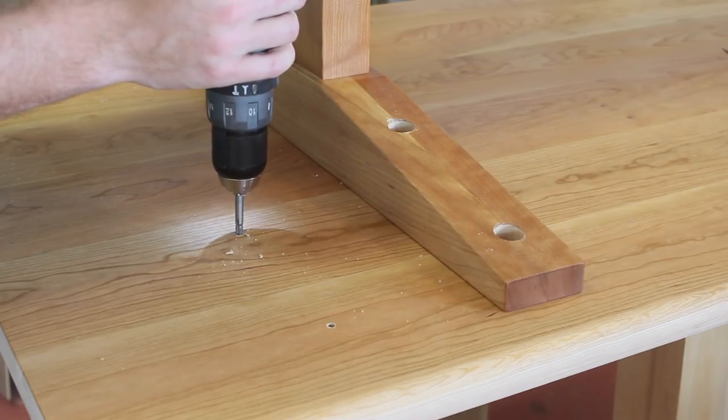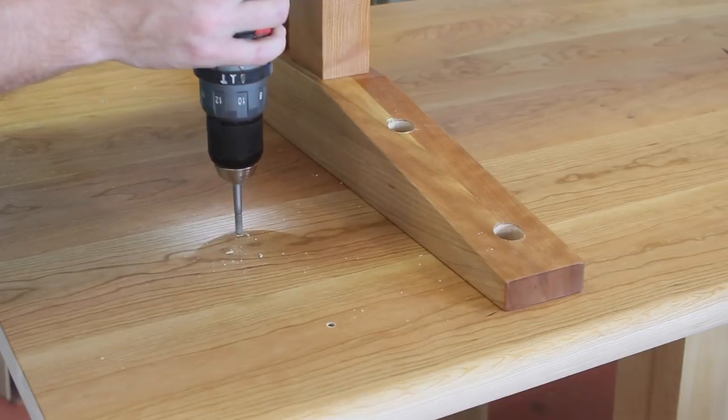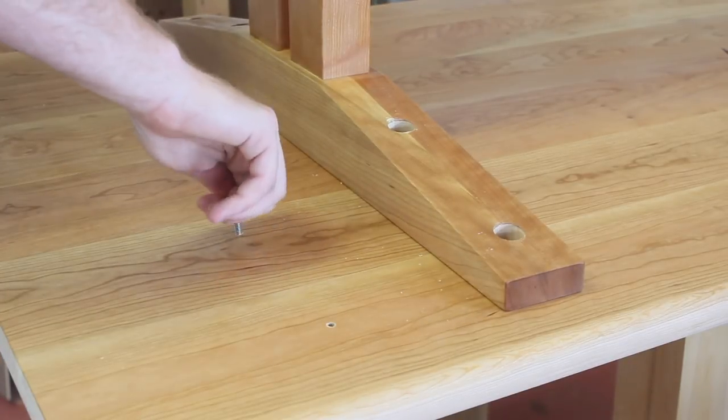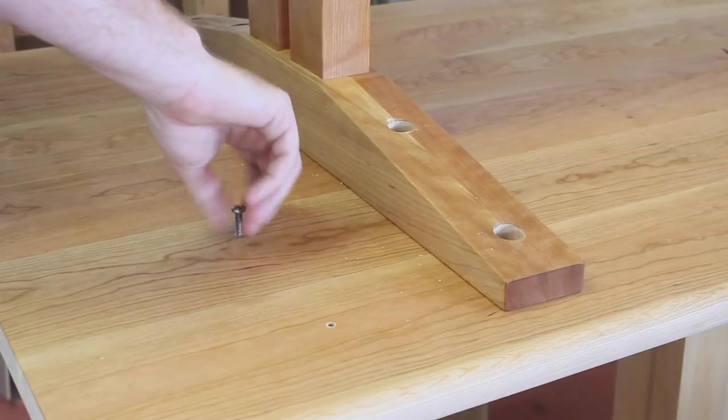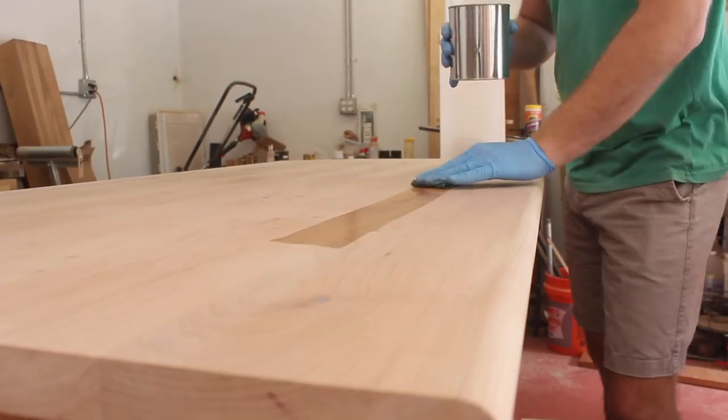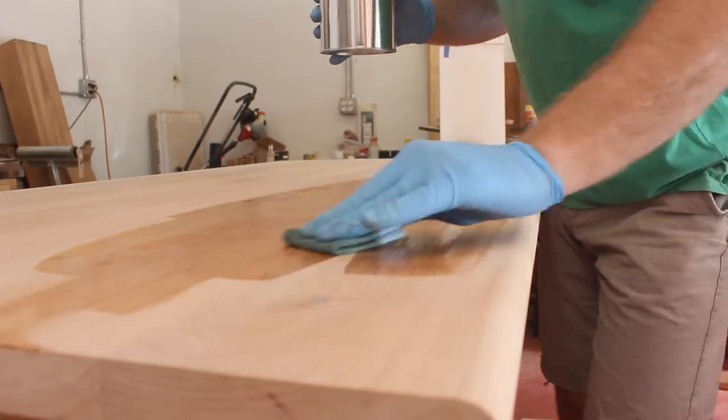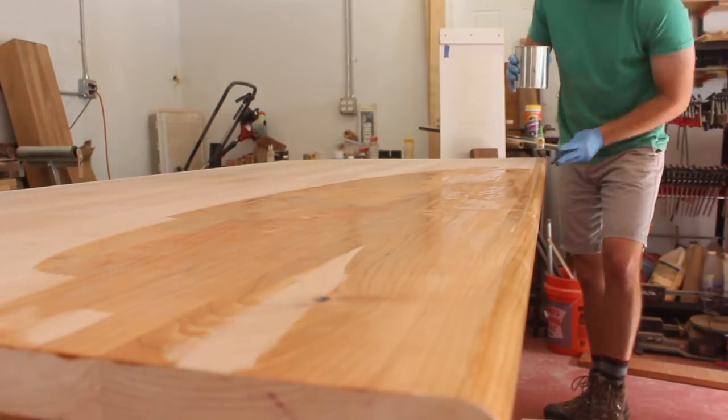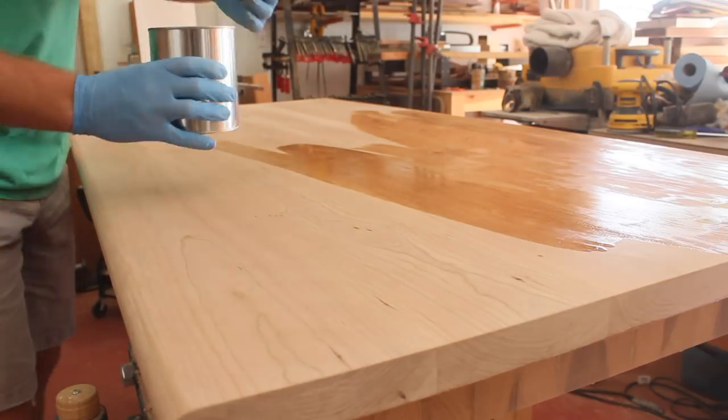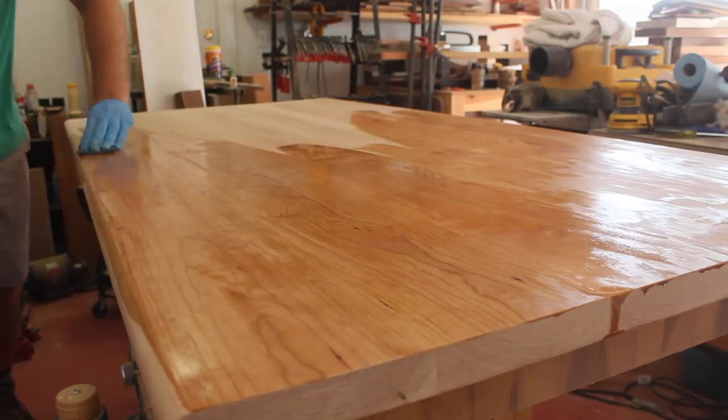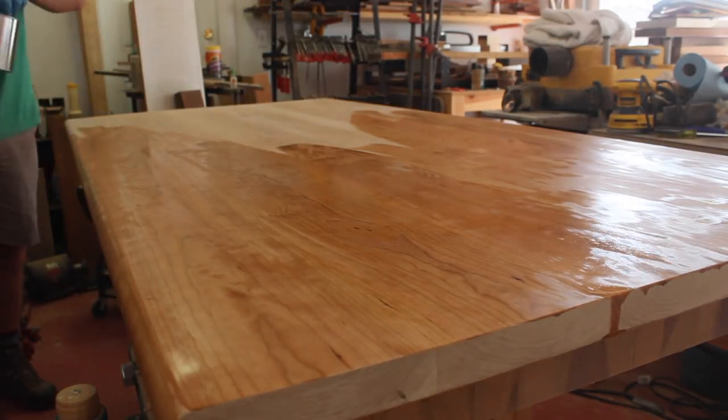I used a ¼-20 tap to get these holes threaded so that they can accept the ¼-20 screws that I'll be using. I did elongate the holes in the trestles to account for wood movement. With those holes threaded on the underside, I can get this piece flipped over and get some finish on the top. I wanted to take extra care because this is the surface that everyone's going to be seeing and touching, so I did use some steel wool in between coats to make sure that there were no imperfections.